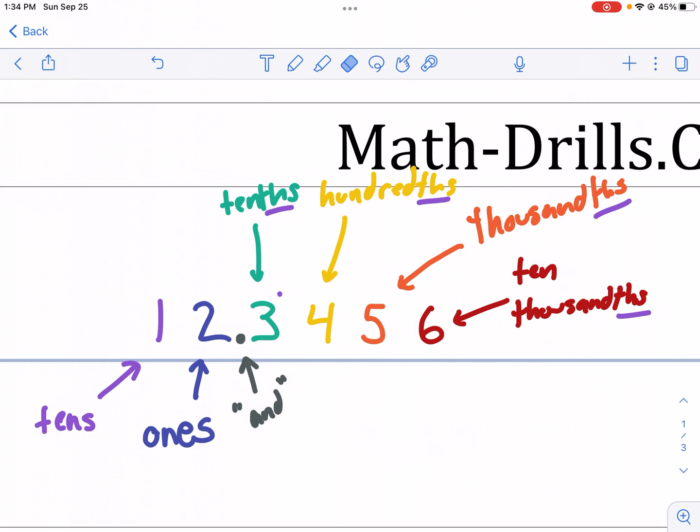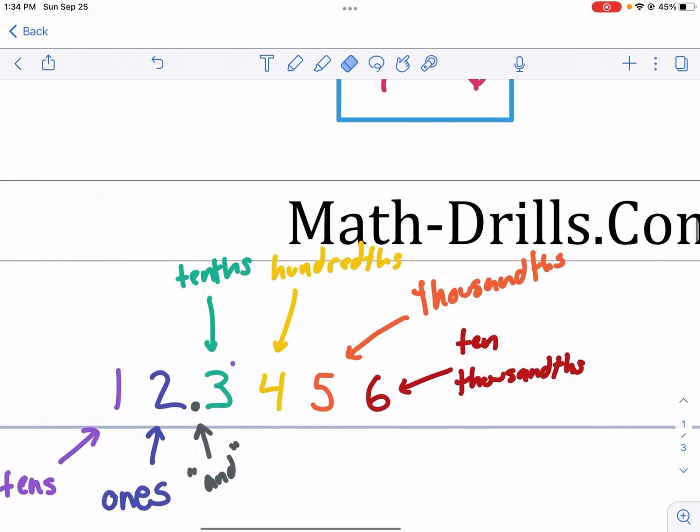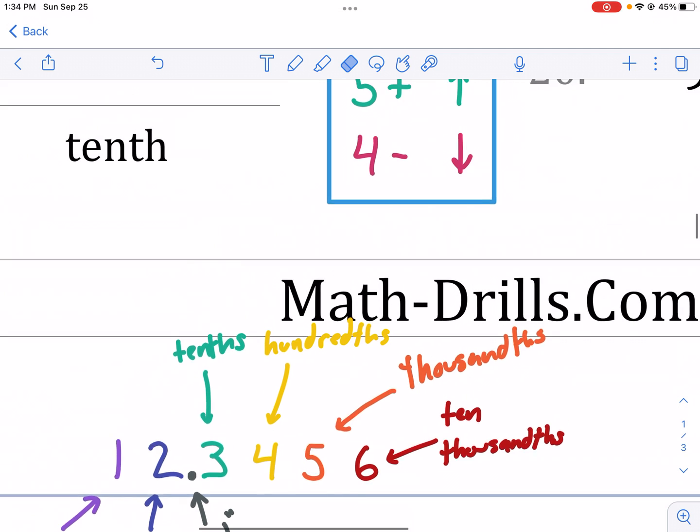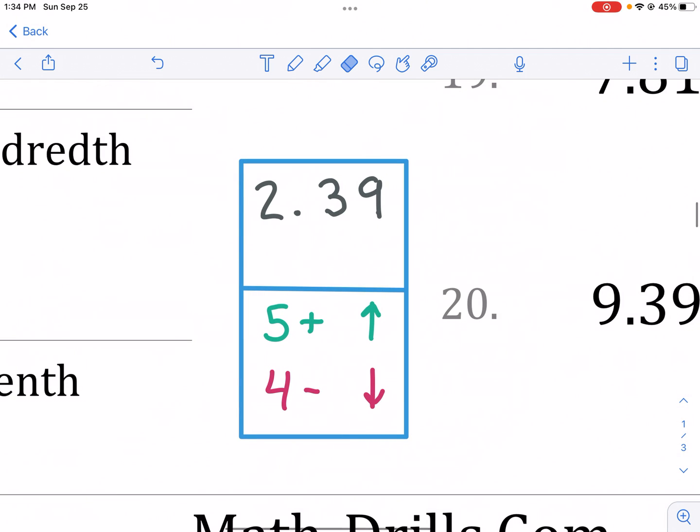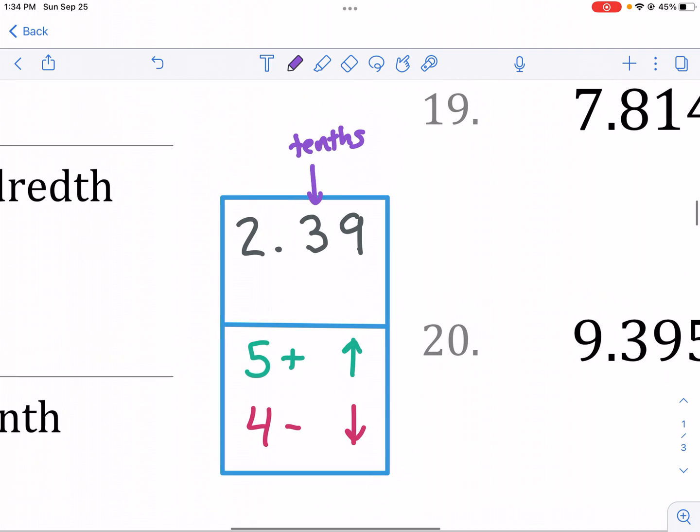So now that we know the places, or if you want go back and rewind and get an understanding of those places, let's apply how do we round. Let's take this number 2.39 or 2 and 39 hundredths. Let's say we wanted to round this number to the nearest tenths place. So there's the tenths place. How do we do that? Well, we first identify the tenths place. Boom, it's right there. So if you didn't know where it was. We've identified it. There's the tenths place.